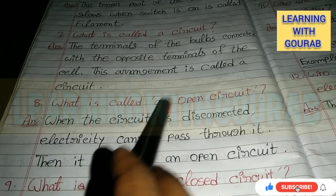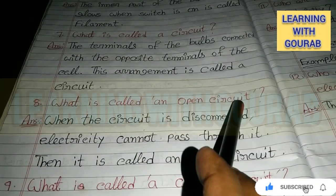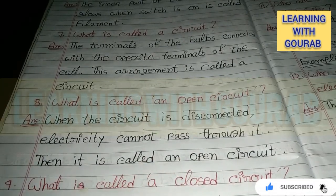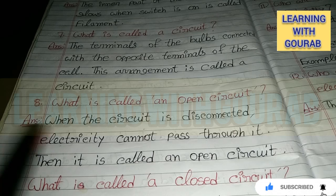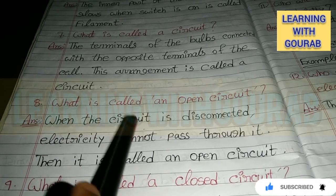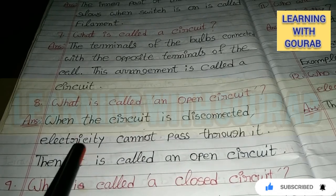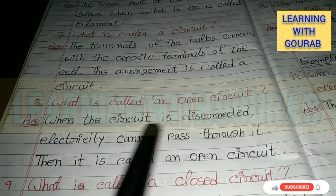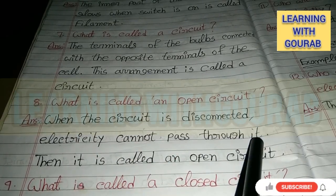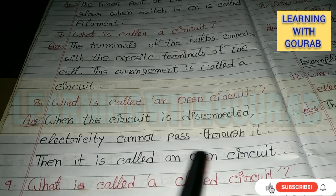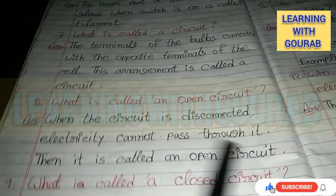Next: What is called an open circuit? Answer: When the circuit is disconnected and electricity cannot pass through it, then it is called an open circuit.